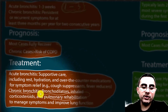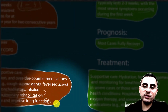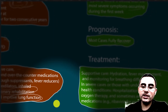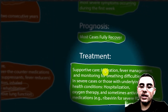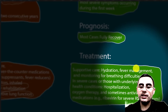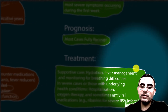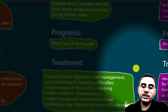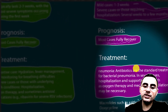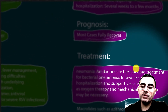Treatment of bronchiolitis also includes supportive care: hydration, fever management, and monitoring of breathing difficulties. In severe cases, hospitalization, oxygen therapy, and sometimes antiviral medications are needed — for example, ribavirin for severe RSV infections.